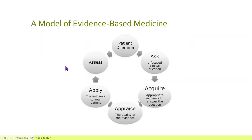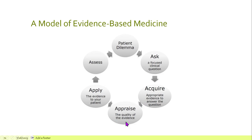Let's end this section by talking about a model of how we can use evidence-based medicine — think of it like a wheel. We start with the patient's dilemma, which can be from the viewpoint of a medical practitioner or the patient themselves. First, you ask a focused clinical question to narrow down your search parameters. Then you acquire the appropriate evidence, and once you've acquired studies, you appraise the quality of the evidence, checking for validity.